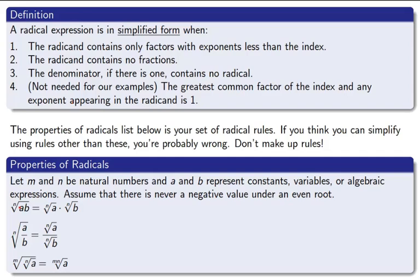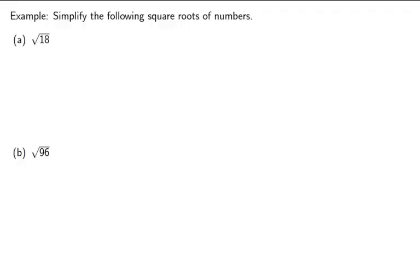Here is the list of radical rules. You can use these rules to help you simplify these things. If you've got a product AB, you can split the radical across the product. For a fraction, you can split the radical across a fraction. And if you happen to have two roots, you can multiply the indices. This is kind of like the rule for power to a power that we talked about previously.